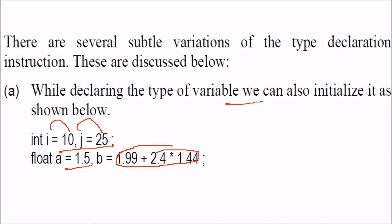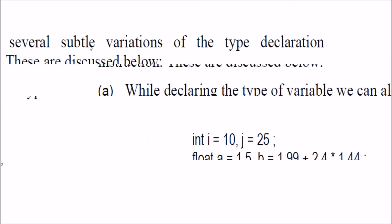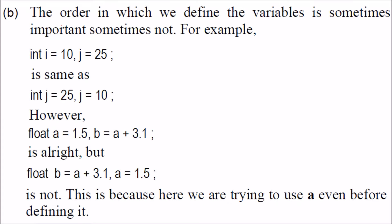But the order is very important. If you give i=10, j=25, or j=25 and i=10, there will be no problem. But if you give float a=1.5, b=a+3.1, this is alright. However, if you change it so b=a+3.1 comes first and a=1.5 comes after, there will be an error. The compiler will not know what value a is. First a has to be defined, then you can do anything with a.